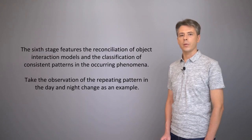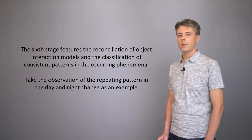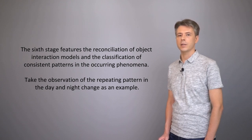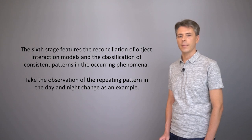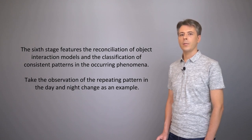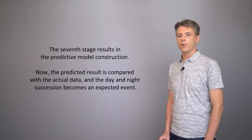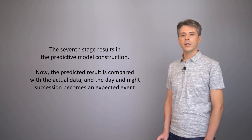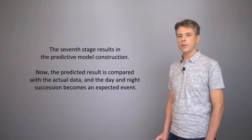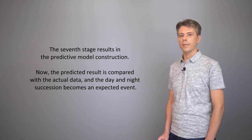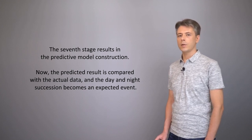The sixth stage features the reconciliation of object interaction models and the classification of consistent patterns in the occurring phenomena — take the observation of the repeating pattern in the day and night change as an example. The seventh stage results in the predictive model construction. Now the predicted result is compared with the actual data, and the day and night succession becomes an expected event.